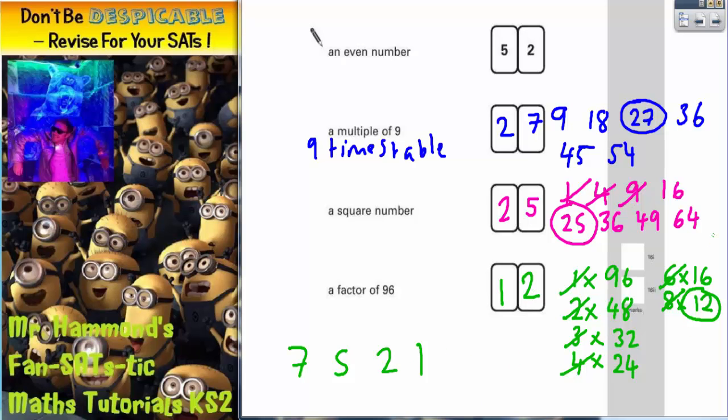And there's your answers. 27 is a multiple of 9, 25 is a square number and 12 is a factor of 96.